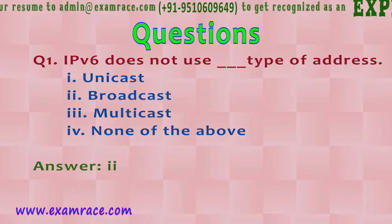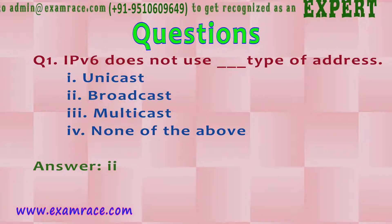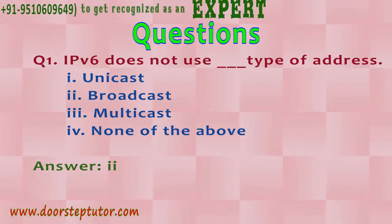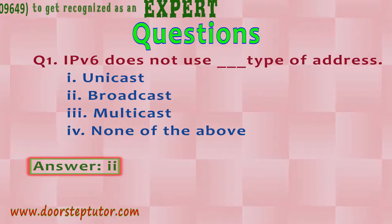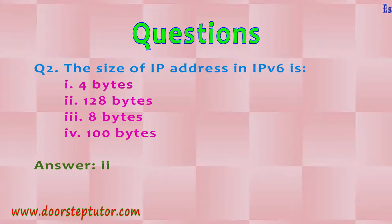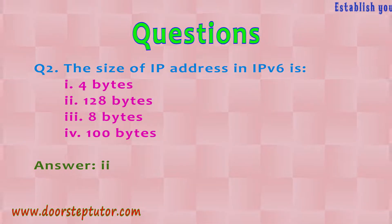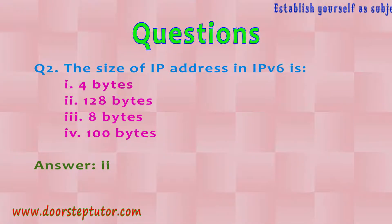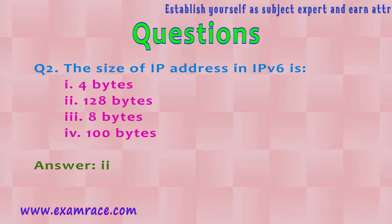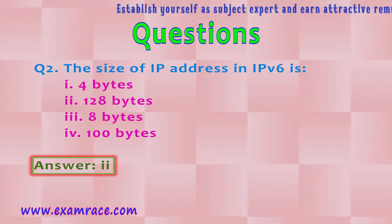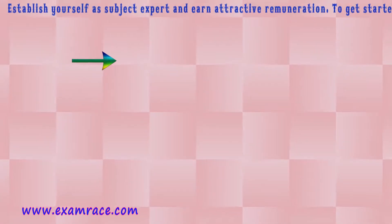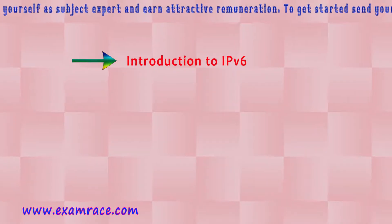Now we have some MCQs related to the same topic. The first question is: IPv6 does not use which type of address? The options are unicast, broadcast, multicast, and none of the above. The answer is option two, that is broadcast. The second MCQ says: the size of an IP address in IPv6 is? The options are 4 bytes, 128 bytes, 8 bytes, and 100 bytes. The answer is 128 bytes.